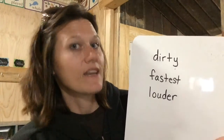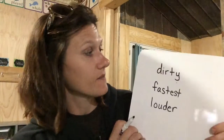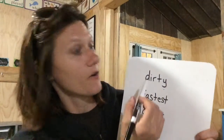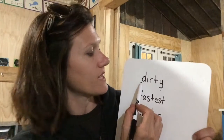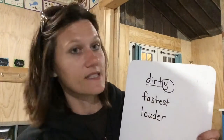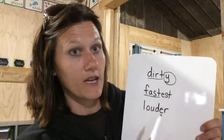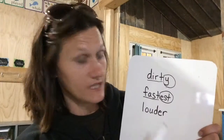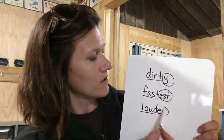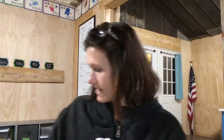If you're still going, it's because you've already done it and we're checking. If you haven't done it yet, you need to back it up. Let's look at dirty — the root word is dirt and the suffix is e. Fastest — the root word is fast and it's got the est in biggest. Louder — root word is loud, er is the suffix. Got it?